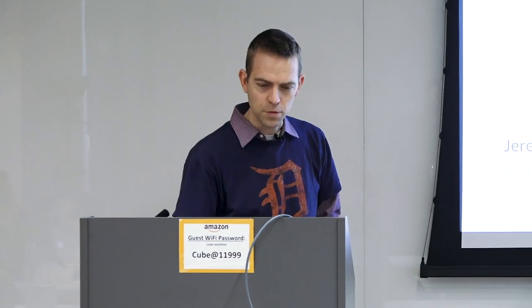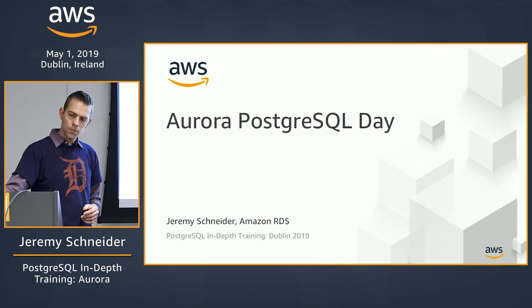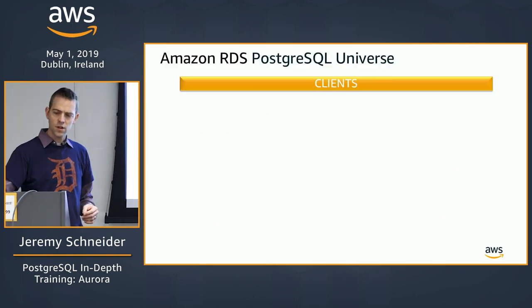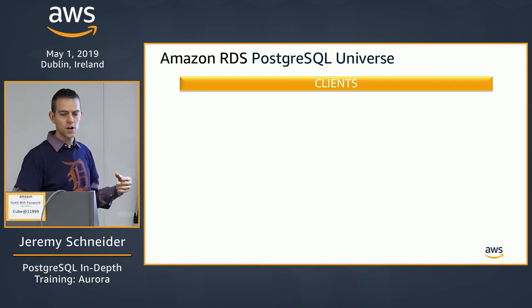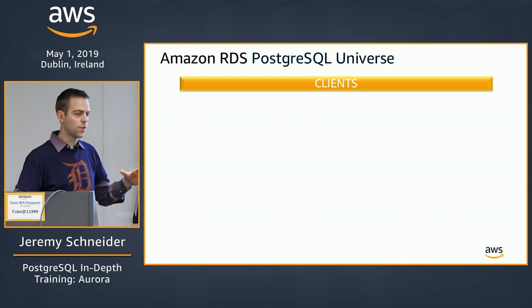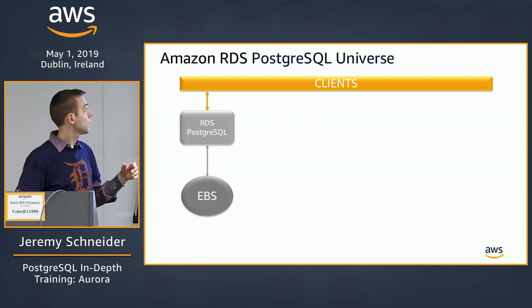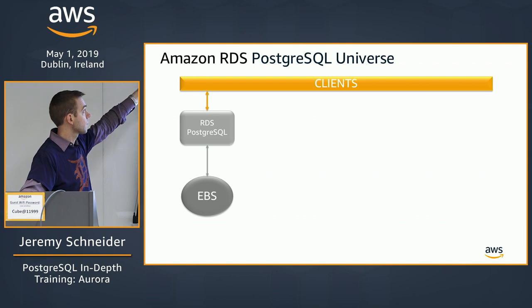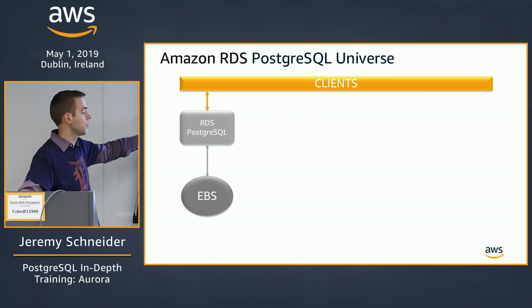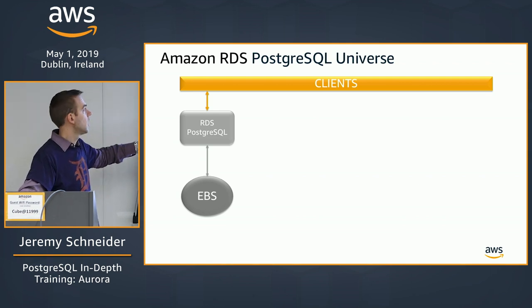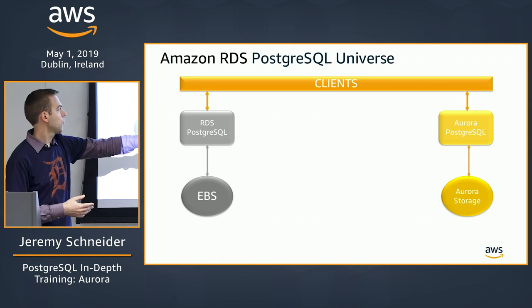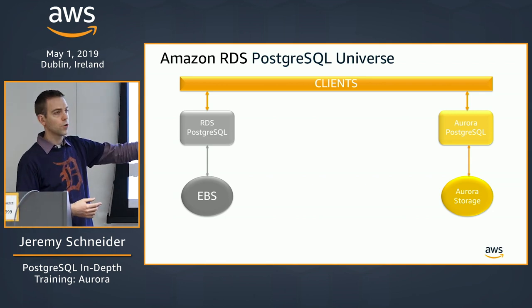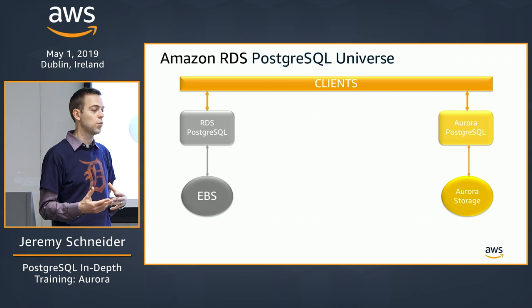Diving into Aurora Postgres — to set the stage, let's take a step back and look at the bigger picture. You have RDS Postgres, which is basically a database running with EBS storage underneath it, and then you have Aurora Postgres, which has the Aurora storage underneath it. These are very different things — EBS is very different from Aurora storage.